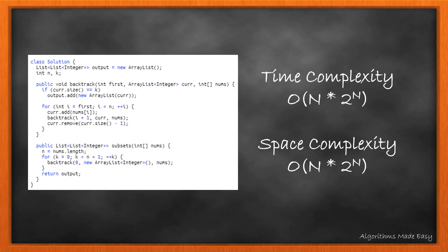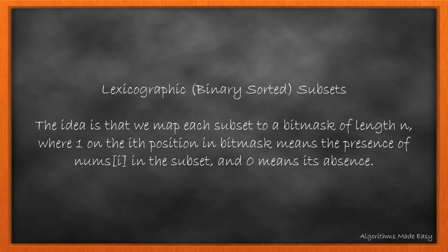The time and space complexity for this method is same as the previous one. Third approach is the lexicographic binary sorted subset approach. The idea is that we map each subset to a bitmask of length n, where 1 on the ith position in bitmask means the presence of nums[i], and 0 means its absence in the subset.